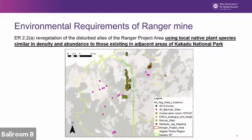As you probably know, the requirements for that mine are that the revegetation of the disturbed sites need to use both local species that are similar in density and abundance to those in the adjacent areas. This is a diagram of both the Alligator Rivers region and all of the vegetation survey plots that have been done in pretty much the last 40 years, starting with the Conservation Commission work in the 70s through to the last large survey done in the Georgetown area. Historically there's been some attempt to aggregate all that data, and we decided to tease that apart a bit.